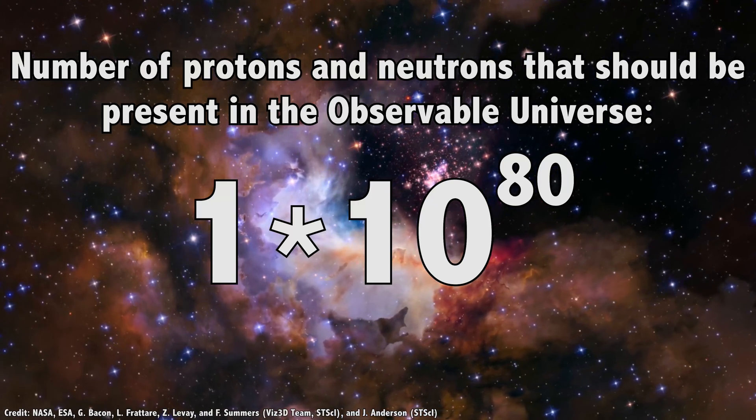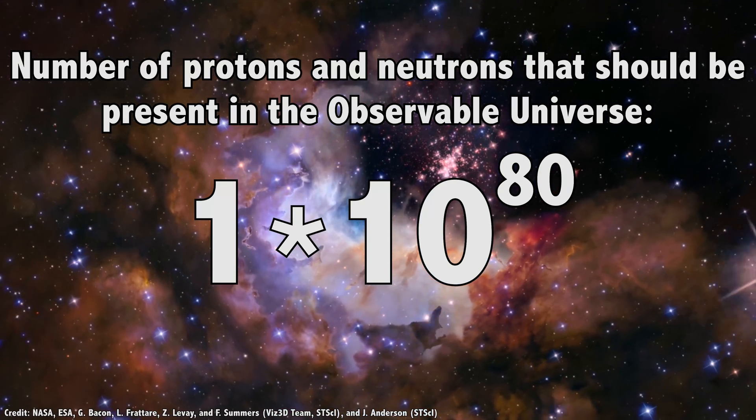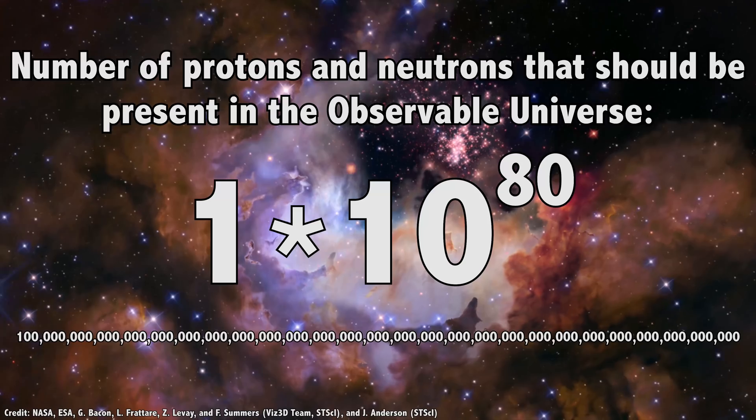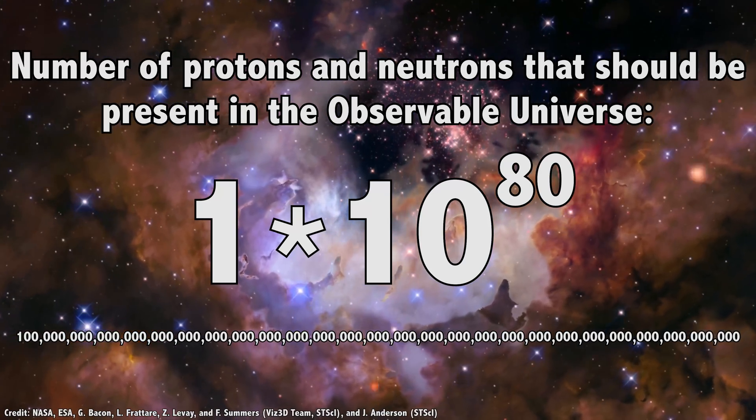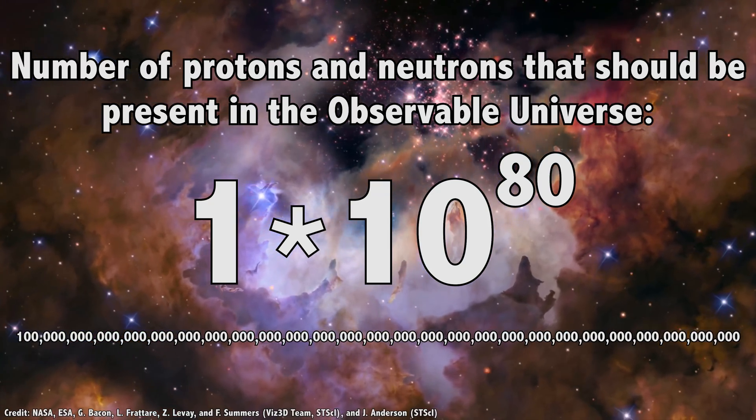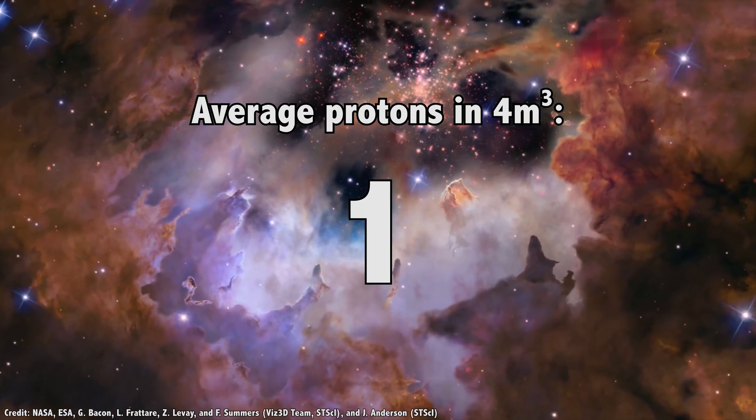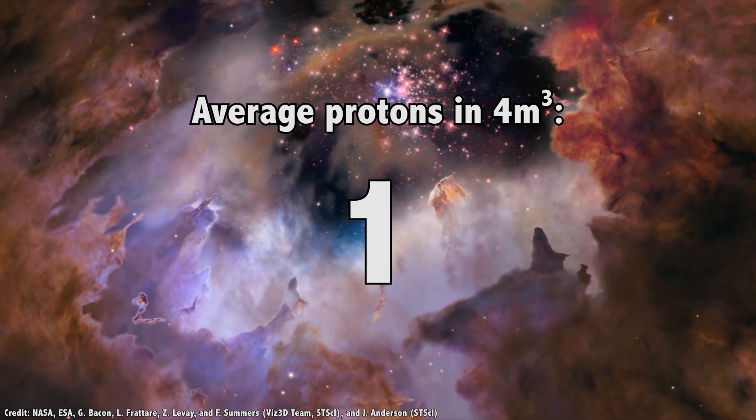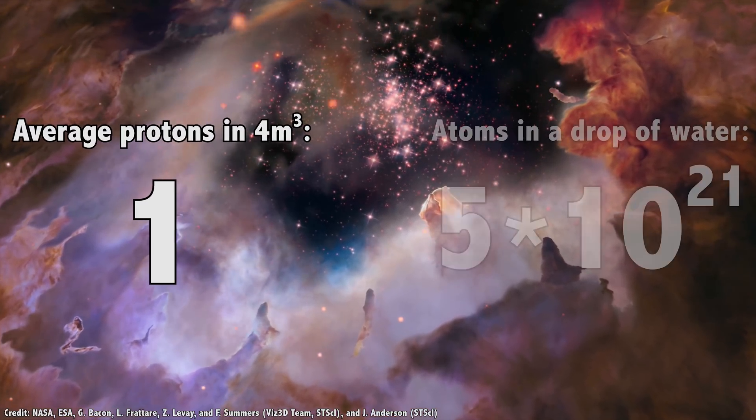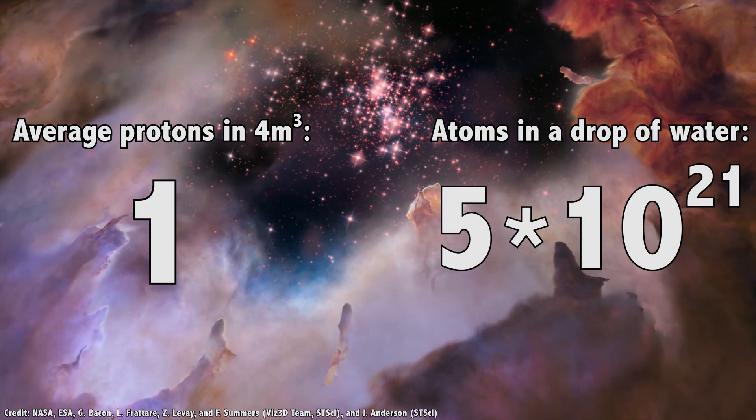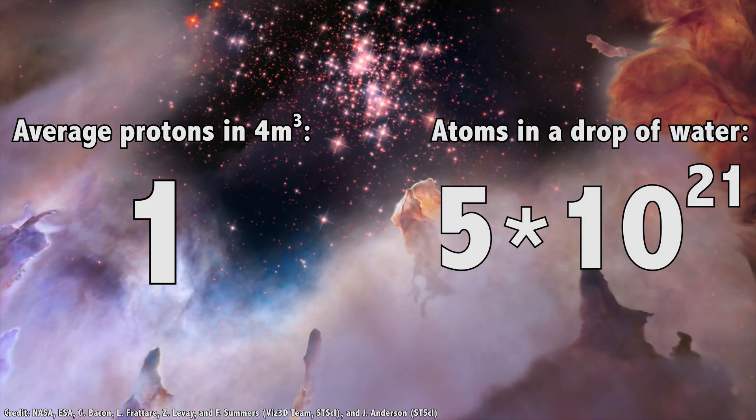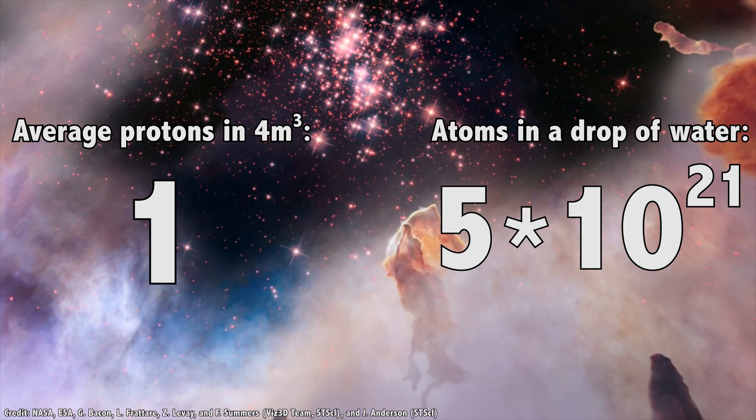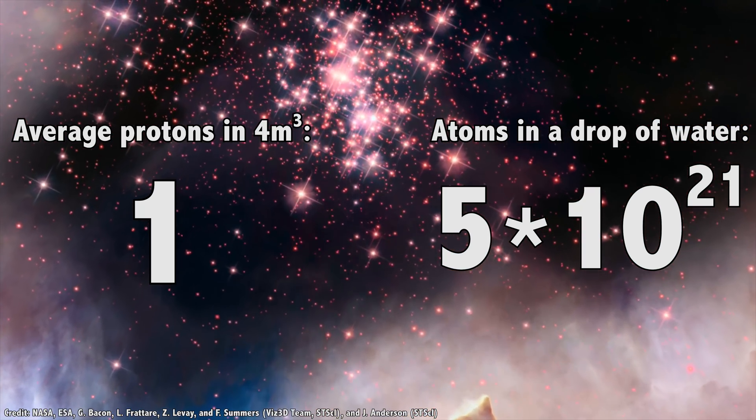That number, by the way, is 1 times 10 to the power of 80. That's a 1 followed by 80 zeros. On average, across the entire universe, there's 1 proton for every 4 cubic meters of space. Just for comparison, there are 5 times 10 to the 21 atoms in a drop of water. So, just in case you weren't aware, we live in a very dense part of the universe.